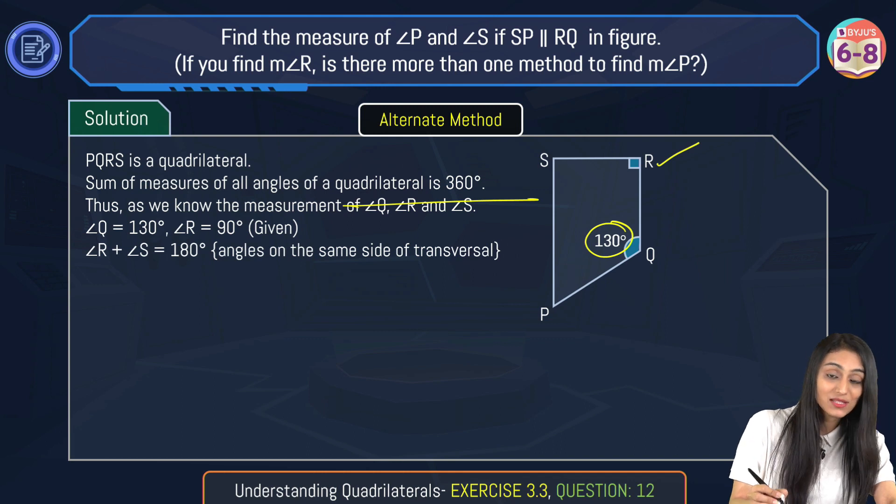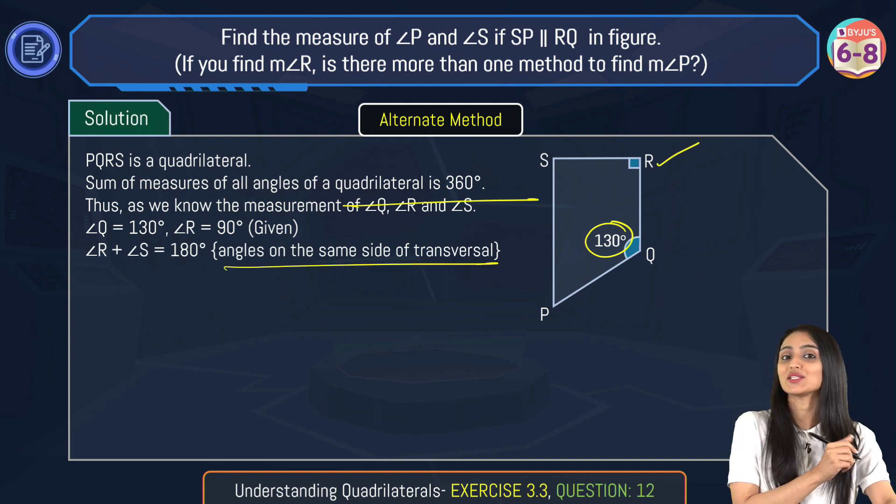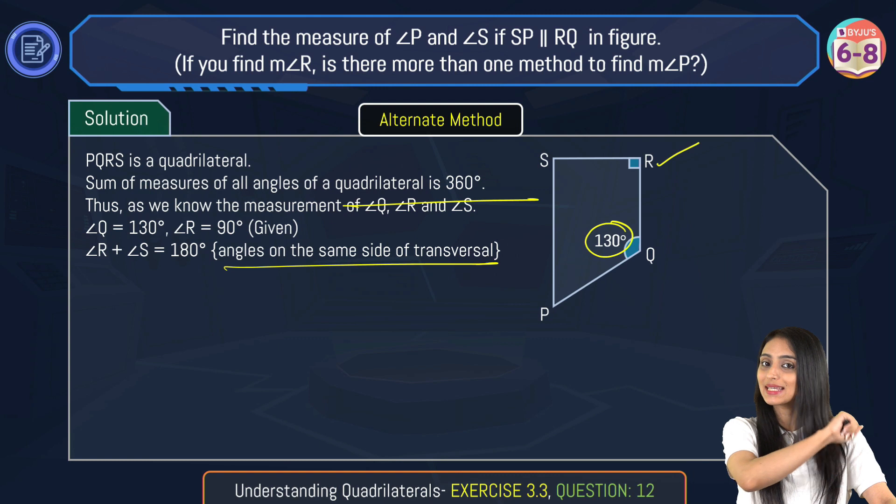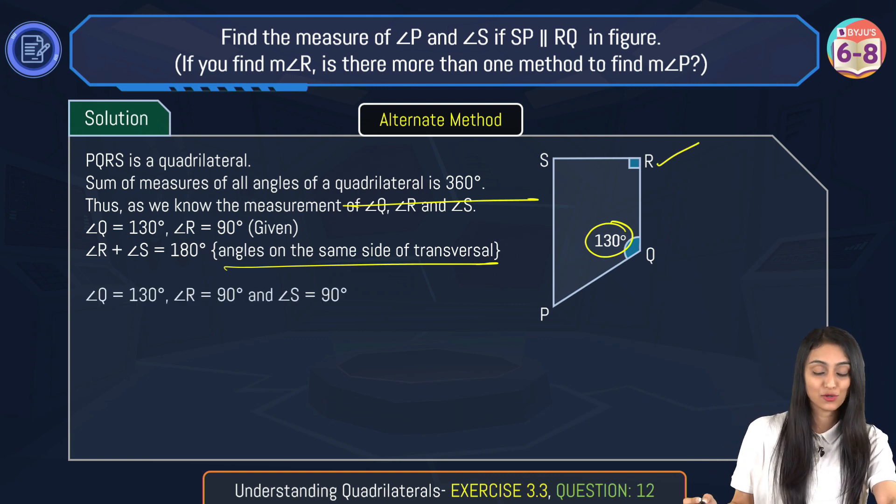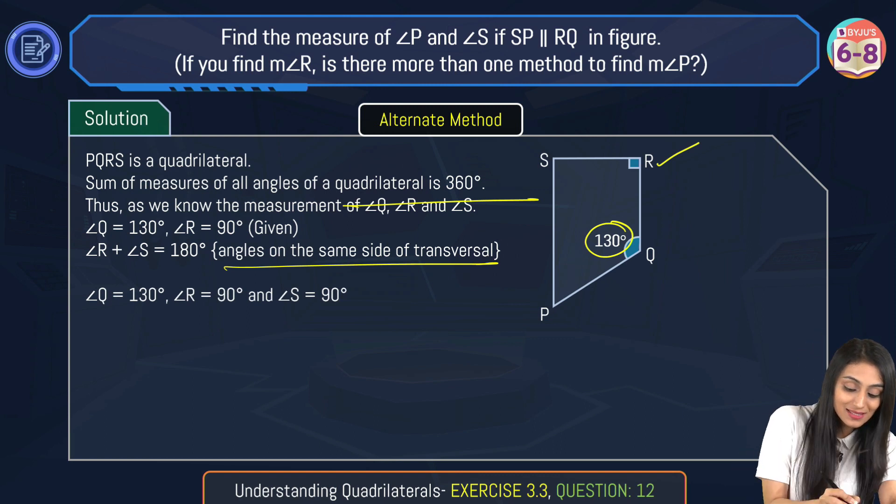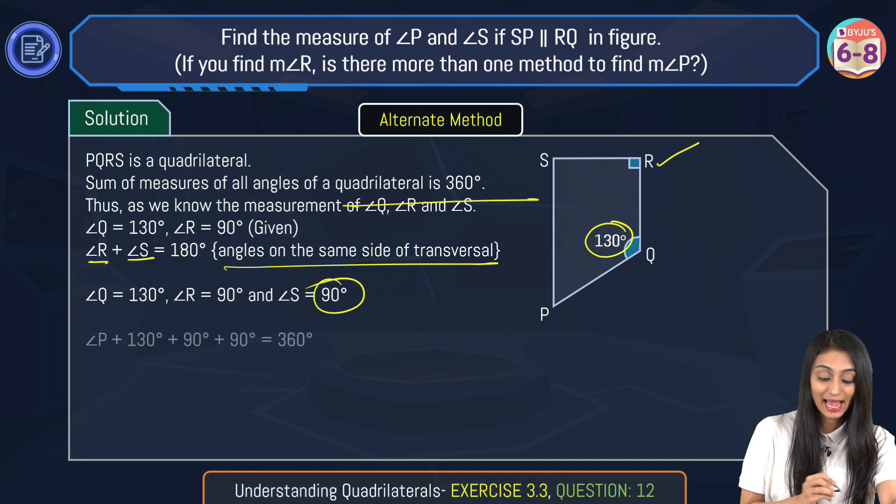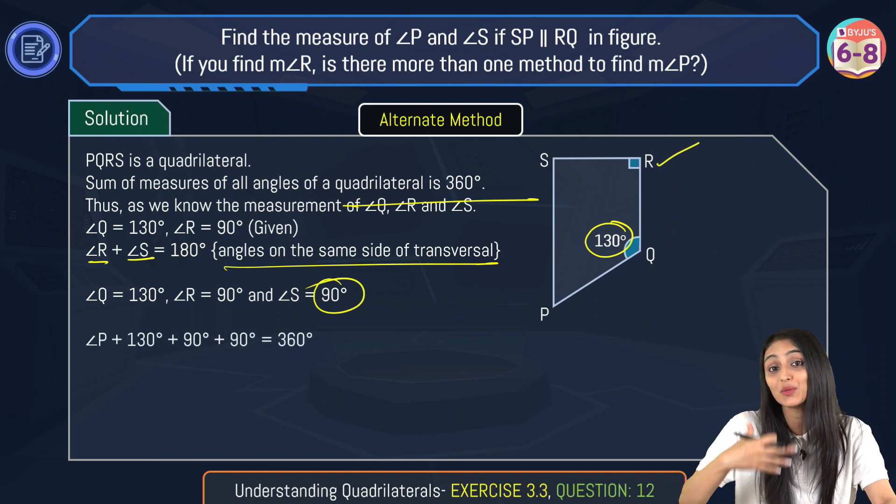And angle R and angle S, we know that angles on the same side of the transversal, that's 180 degrees. From here we can say that if I add up all the angles, what is this going to be? Because this is 90 degrees already, so obviously this is also going to be 90 degrees. Let's add up all the angles. Their sum is going to equal 360 degrees.